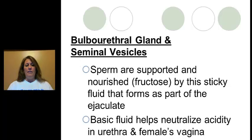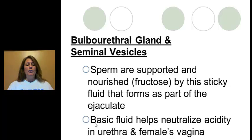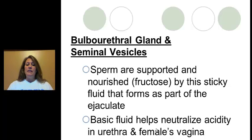The first two glands work together: the bulbourethral gland and the seminal vesicles. This is where the sperm is nourished — it contains a sugar called fructose and gives the fluid its sticky component. Most importantly, its fluid is basic, meaning it helps neutralize the acidity of both the urethra and the female's vagina. This is critical because those acidic environments would otherwise kill the sperm.